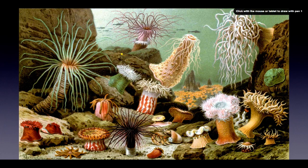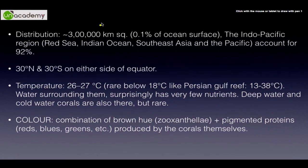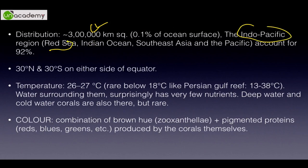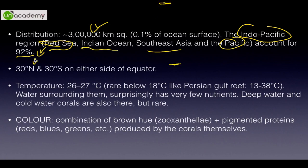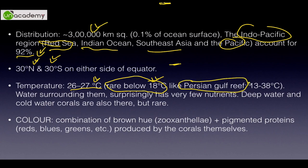Moving forward on distribution: coral reefs cover 0.1 percent of ocean surface. The major distribution is in the Indo-Pacific region — from the Red Sea between the Middle East and Egypt, through the Indian Ocean, Southeast Asia, and the Pacific — accounting for 92 percent of polyps. They are found between 30 degrees north and 30 degrees south, requiring temperatures of 26 to 27 degrees Celsius. They are extremely rare below 18 degrees Celsius, though the Persian Gulf reef tolerates a wide range of 13 to 38 degrees Celsius.